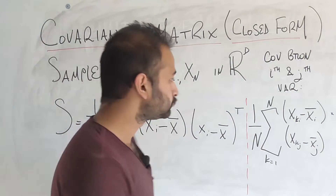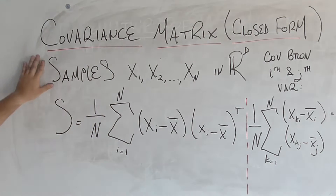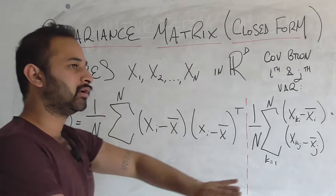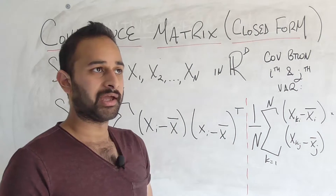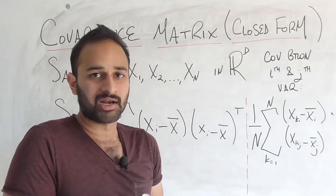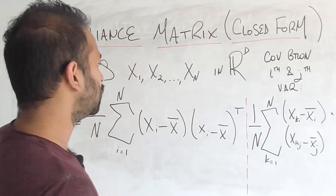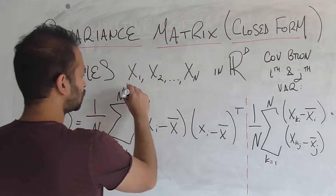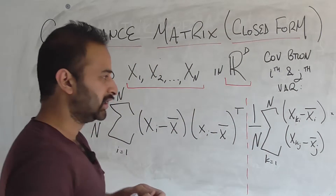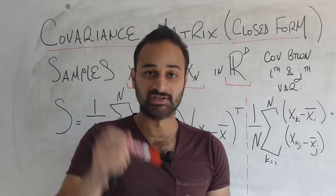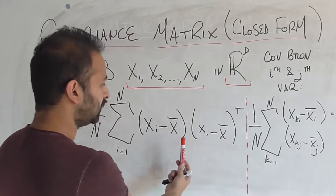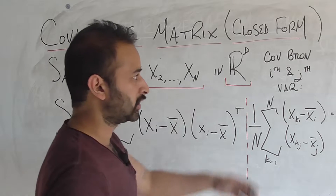The setup is that we have samples x1, x2, all the way to x big N. In our original covariance video these were people, and their preferences between how happy an apple and a banana made them is what was encoded within each one. So we have N different samples here, and each one lives in space R^d, which just means that each of them is a vector with d components in it, and there are N of them total.